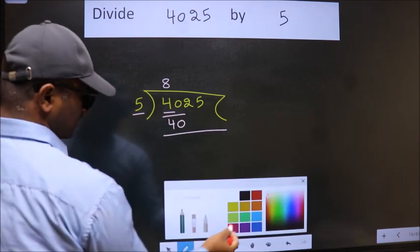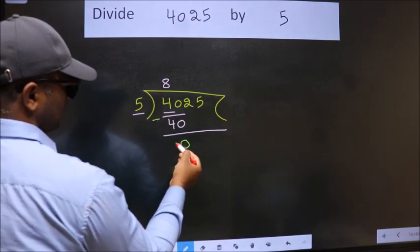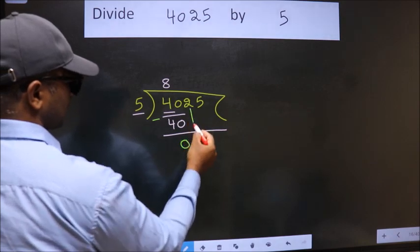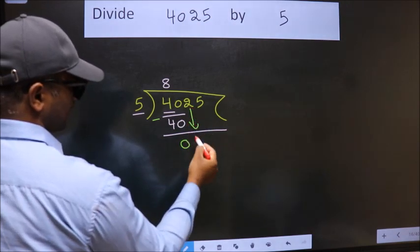Now we should subtract. We get 0. After this, bring down the beside number. So, 2 down.